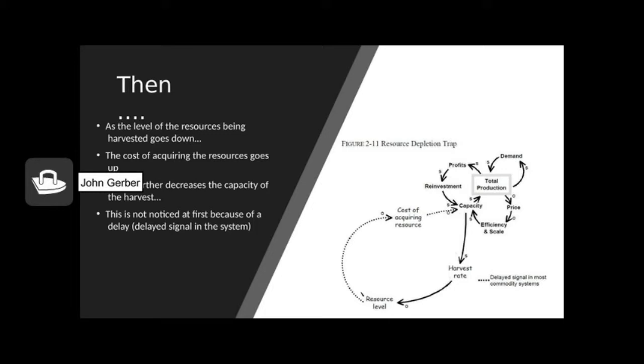So let's now use our system dynamics model to understand what's happening here. As capacity increases, look at the arrow that goes straight down to harvest rate, moves in the same direction. As capacity increases, harvest rate increases. As harvest rate increases, the resource level decreases. If you use fish as an example, capacity of fishing goes up, more fish come out of the ocean and more fish to come out of the ocean means the fisheries are left with fewer fish.